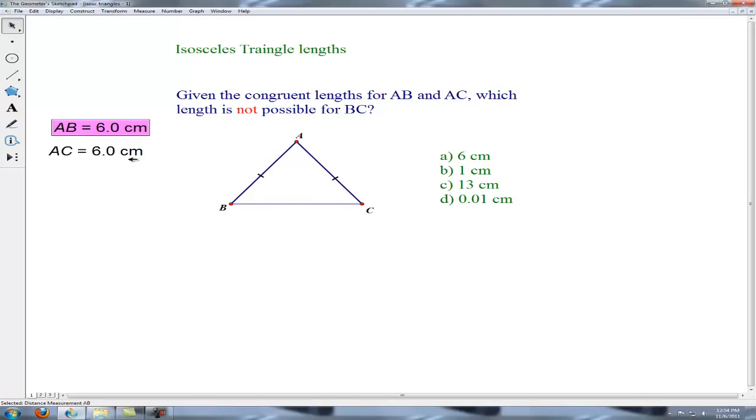And our given information also explains the word isosceles, is that we have two equal sides. These two are six centimeters each. Now the way this is constructed is those two sides, AB and AC, will maintain length of six,